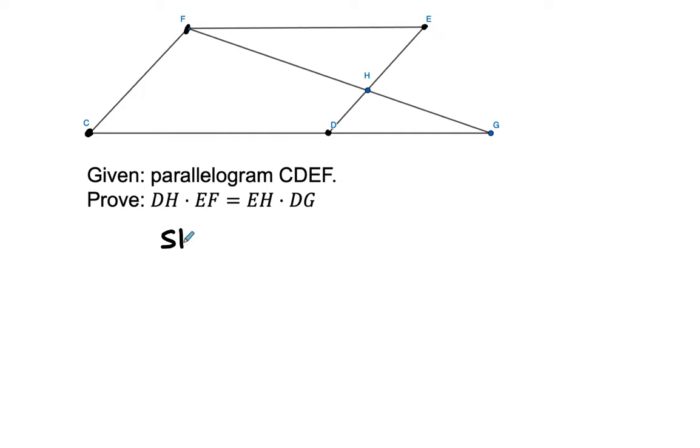Okay. So in our proofs, typically we have some kind of statement and then some type of reason. So first of all, let's restate that we have parallelogram. That's my parallelogram symbol CDEF, and that is given, right? So CDEF, this is a parallelogram.